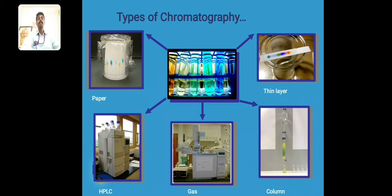There are many types of chromatography: paper chromatography, thin layer chromatography, column chromatography, gas chromatography, and high pressure liquid chromatography, shortly called HPLC. More recent innovations include GCMS chromatography and ion exchange chromatography, which is also a special technique.